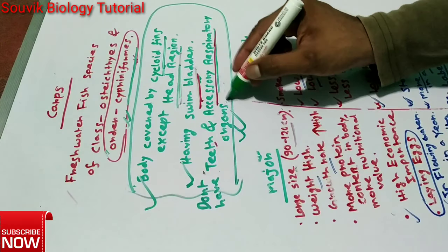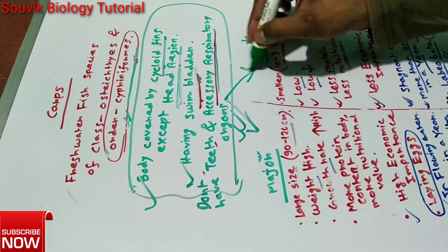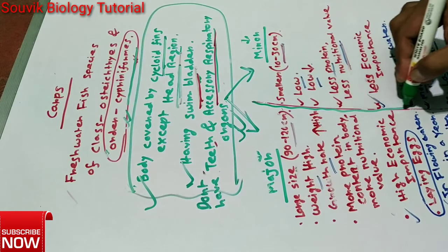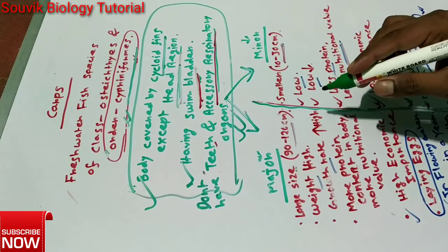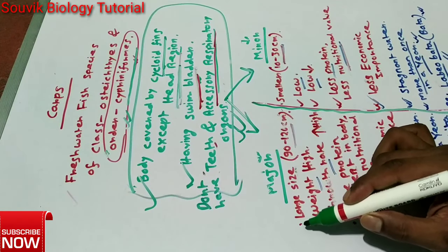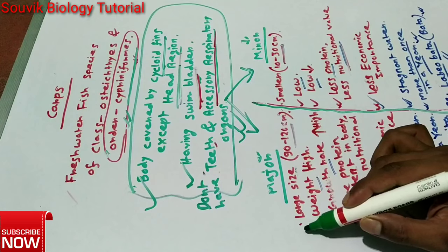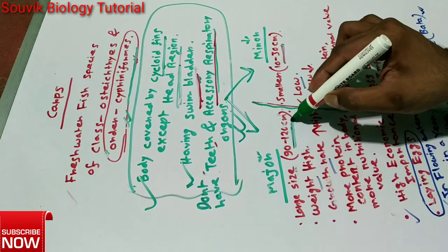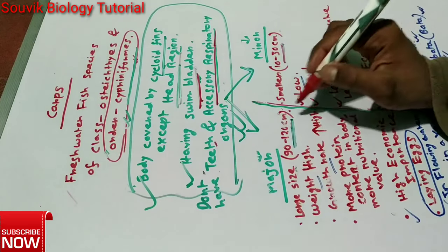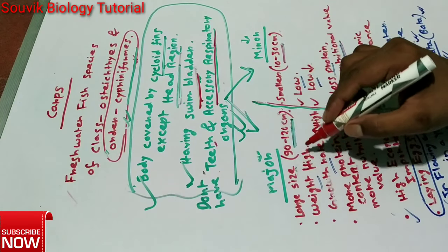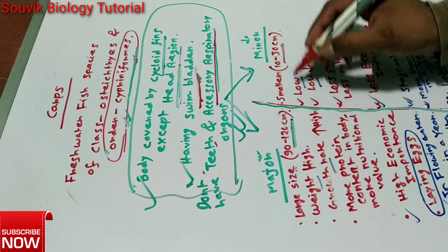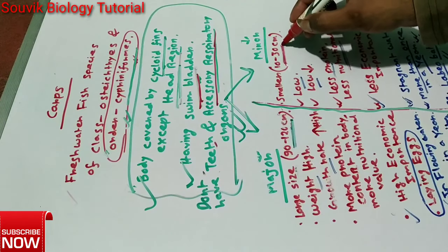These carps are broadly divided into major carps and minor carps. The difference between major carps and minor carps: major carps have a large size, which is 90 to 120 cm, whereas minor carps have a smaller size of 10 to 30 cm.